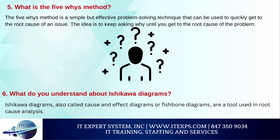5. What is the 5-whys method? The 5-whys method is a simple but effective problem-solving technique that can be used to quickly get to the root cause of an issue. The idea is to keep asking why until you get to the root cause of the problem. This method can be used on its own or as part of a larger root cause analysis process. 6. What do you understand about Ishikawa diagrams? Ishikawa diagrams, also called cause and effect diagrams or fishbone diagrams, are a tool used in root cause analysis to visually organize the potential causes of a problem. The diagram is structured like a fish skeleton, with the main issue in the center and the potential causes branching out from it.